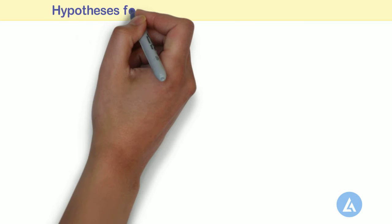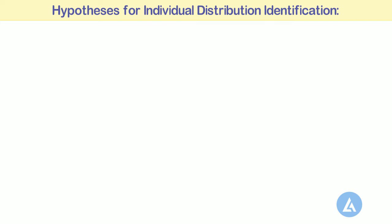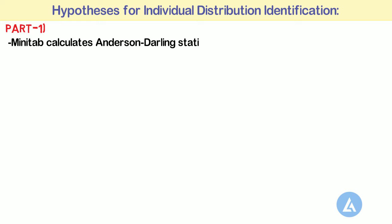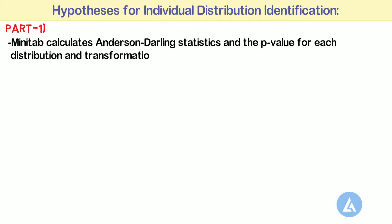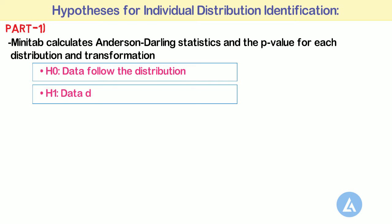The hypothesis for Individual Distribution Identification consists of two parts. Part 1: Minitab calculates Anderson-Darling statistics and the p-value for each distribution and transformation. For the Anderson-Darling test, the hypotheses are as follows — H0: data follows the distribution, and H1: data does not follow the distribution.